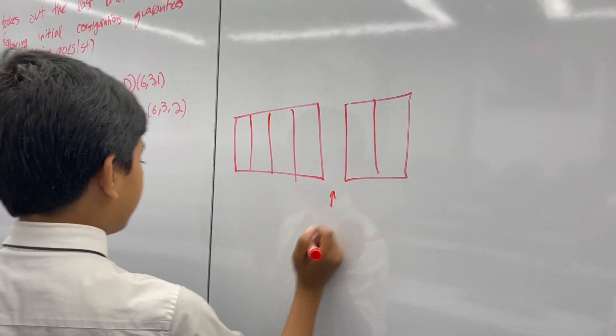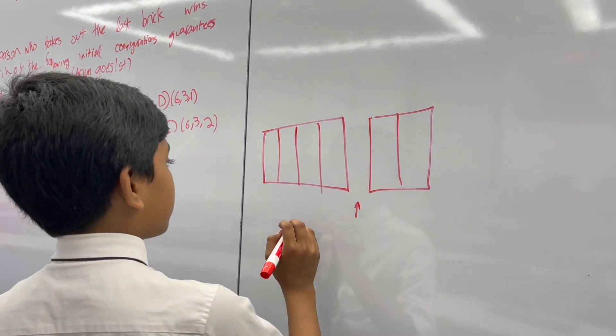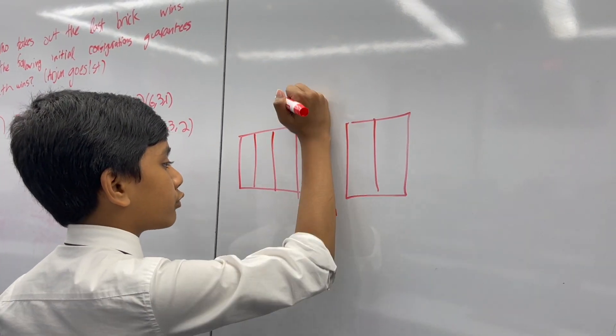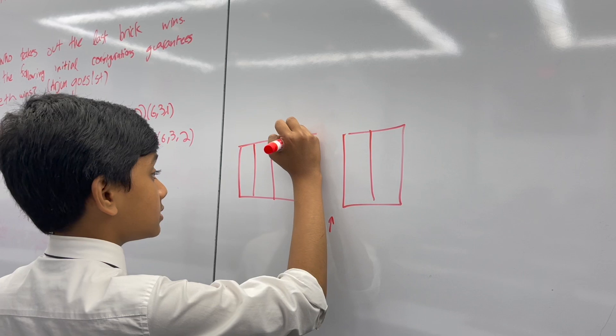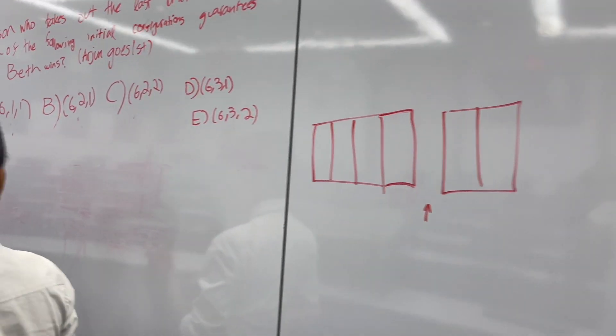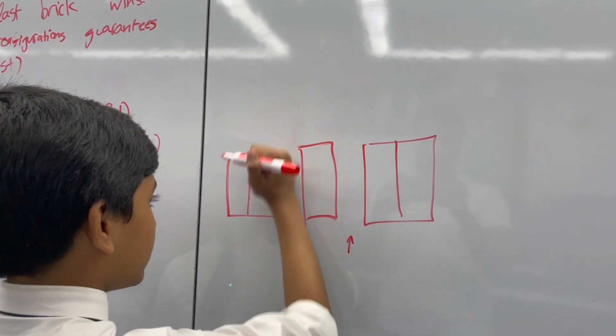The possible configurations they talked about were 3-2, which looked like this. Another possible configuration was 2-1-2, which looked like this.